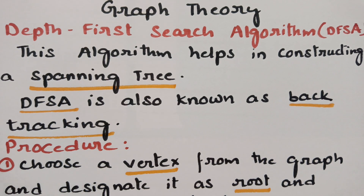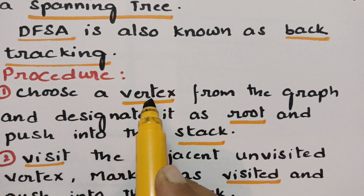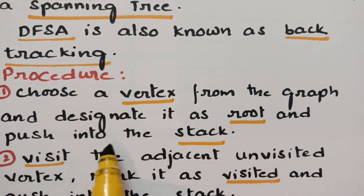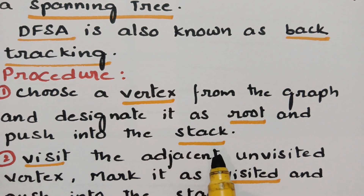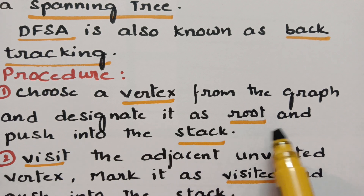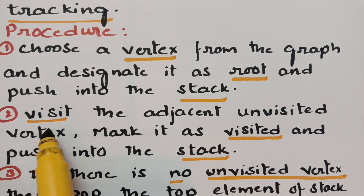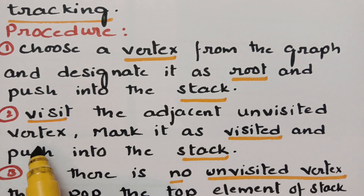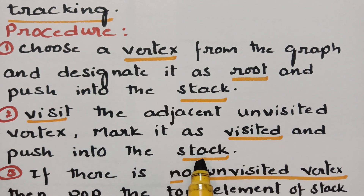Here is the algorithm. First, we have to choose a vertex from the graph, designate it as a root vertex, mark it as visited, and push it into the stack. Next, we have to visit the adjacent unvisited vertex, mark it as visited, and push it into the stack.